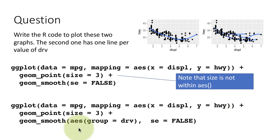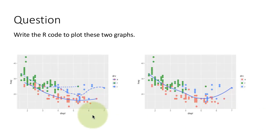Of course, we could have said geom_smooth method equals LM. If we had said that, then we would have got the straight lines for a linear regression instead of the curved lines that come from locally smoothed lines. Again, one more point here, write R code to plot these two graphs.